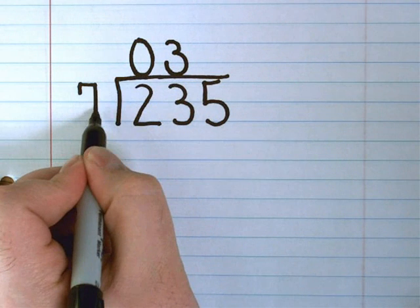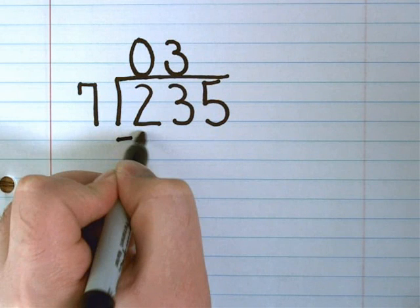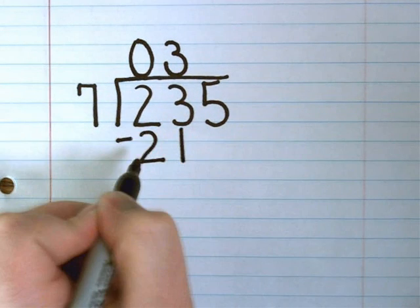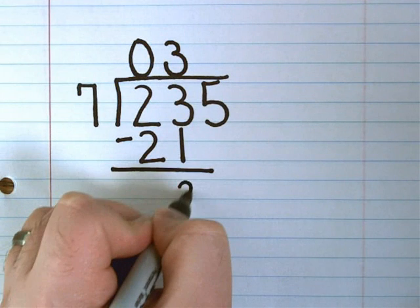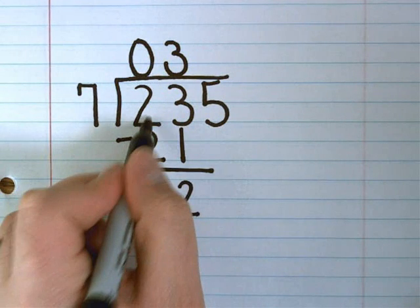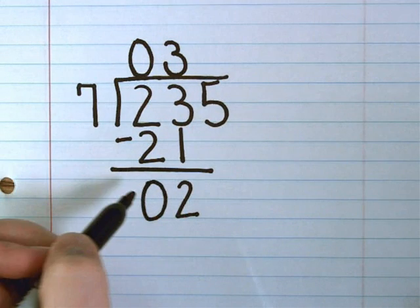I multiply 3 and 7, which puts me at 21, and this is when I subtract away. Of course, 3 minus 1 gives me 2. 2 minus 2 is 0. Now, I only have 2 showing. I can't make any more groups of 7, but I have something else to bring down.